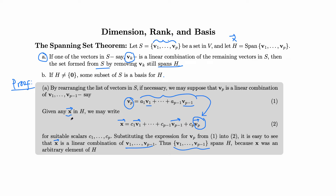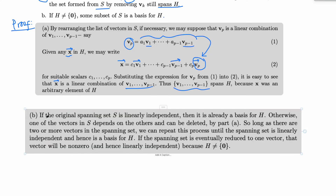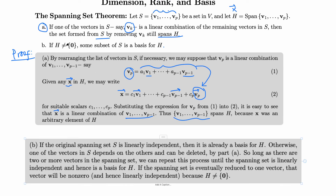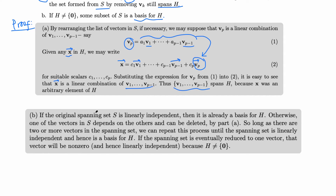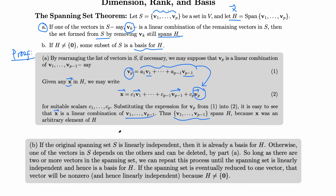Thus v1 through vp−1 spans H, because x was an arbitrary element of H. That completes part A. For part B: if H is not the zero vector alone, then some subset of S is a basis for H. To show it's a basis, we need the vectors to be linearly independent and to span H. If the original spanning set v1 through vp is already linearly independent, then it is already a basis for H.